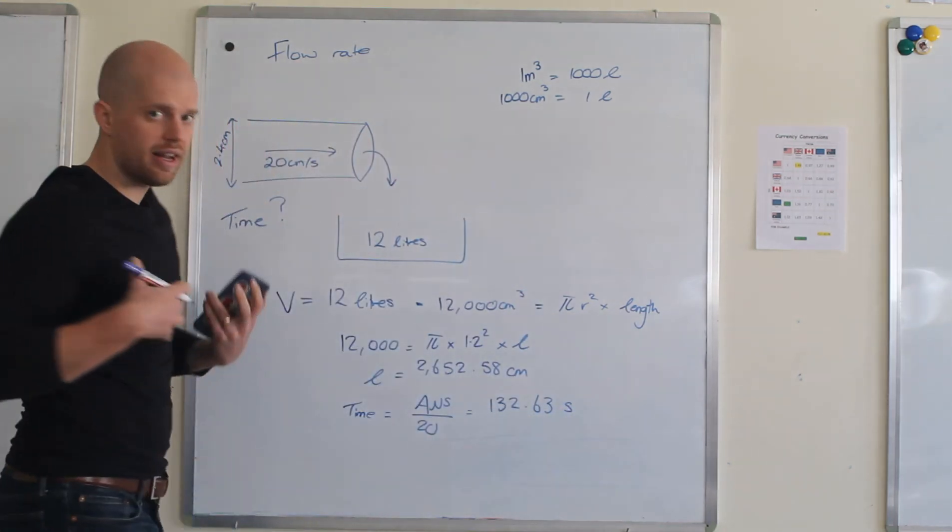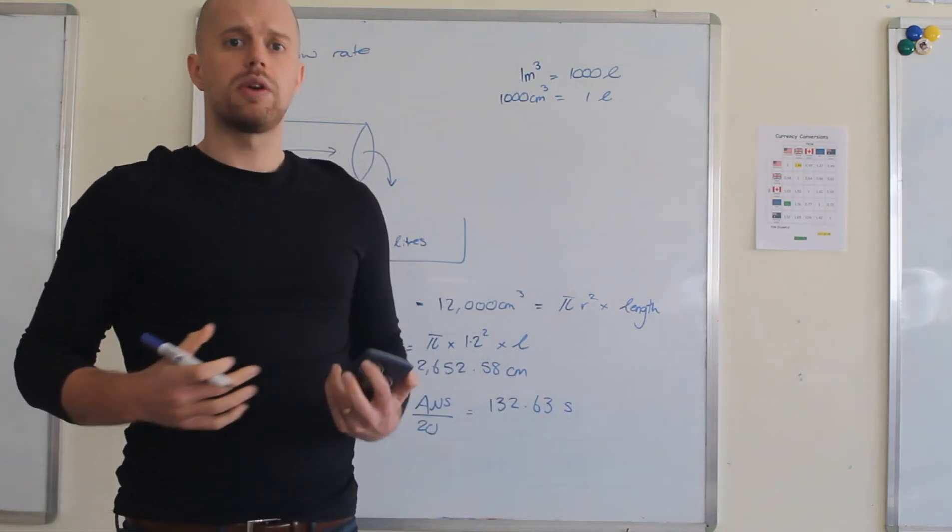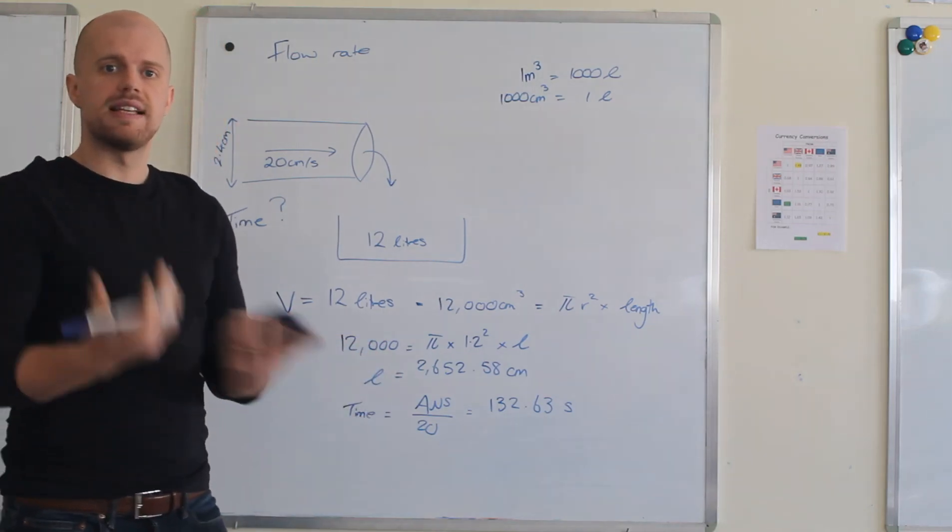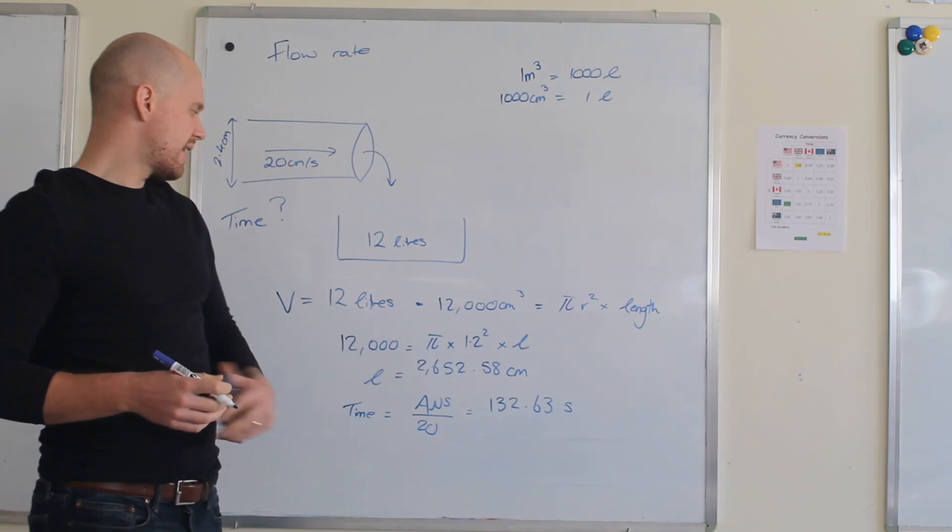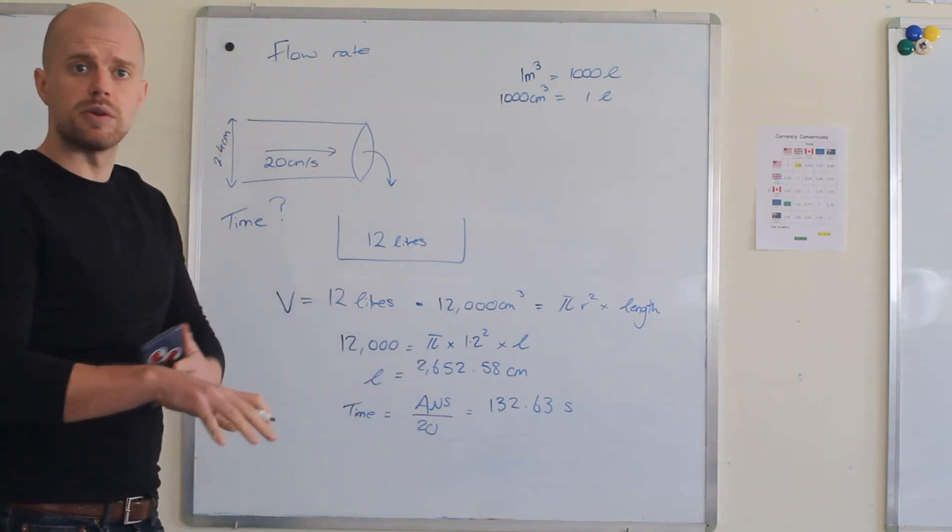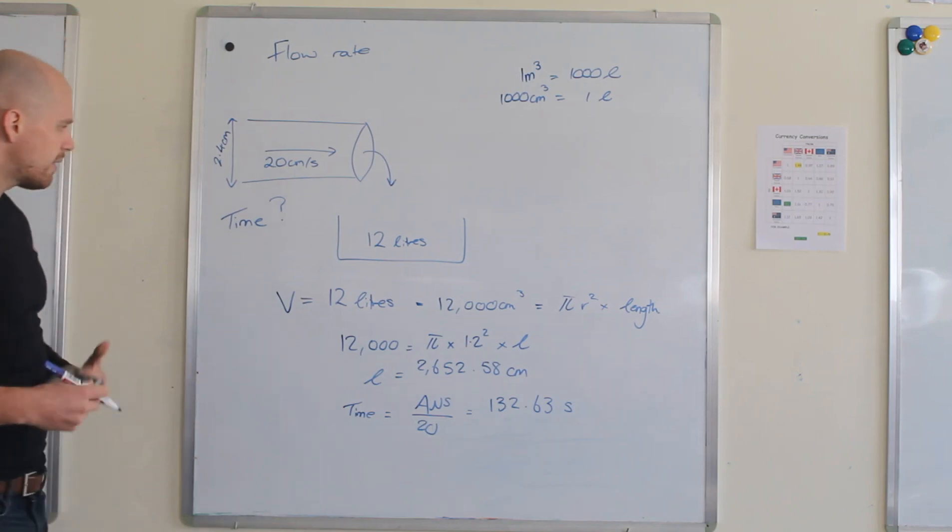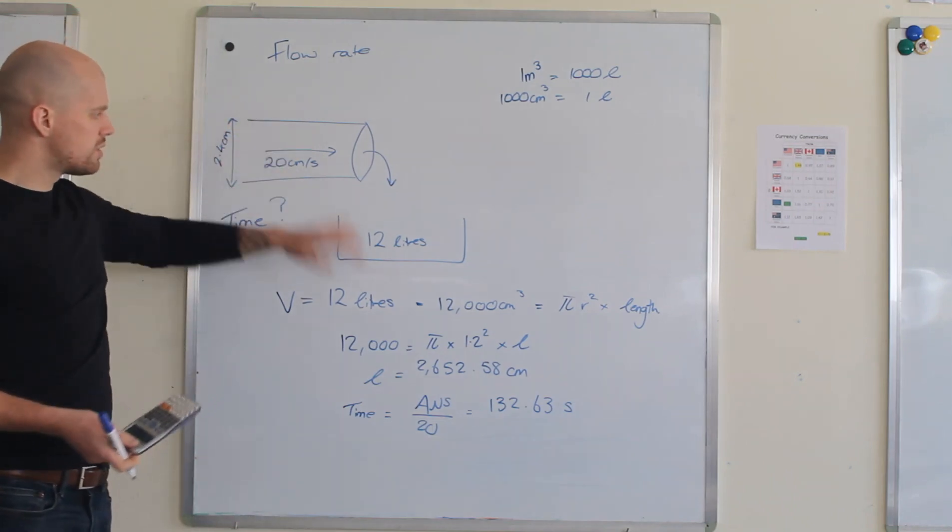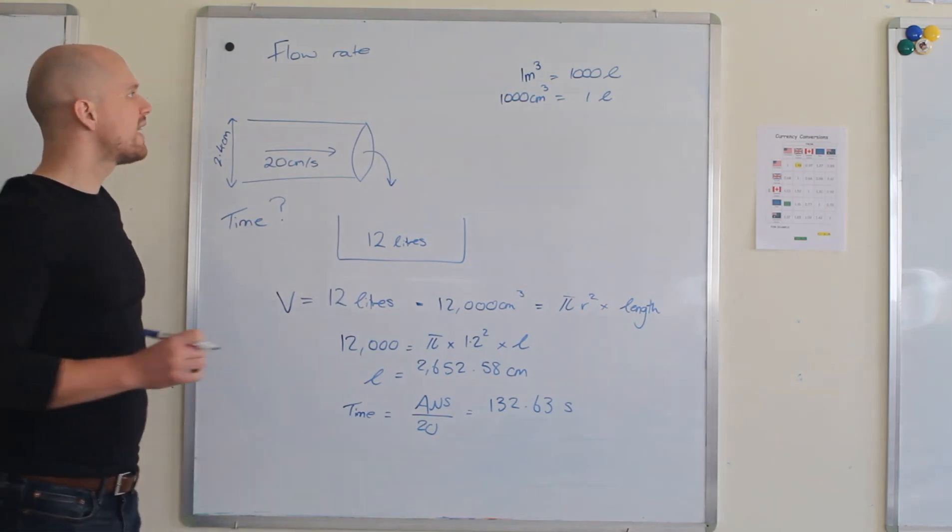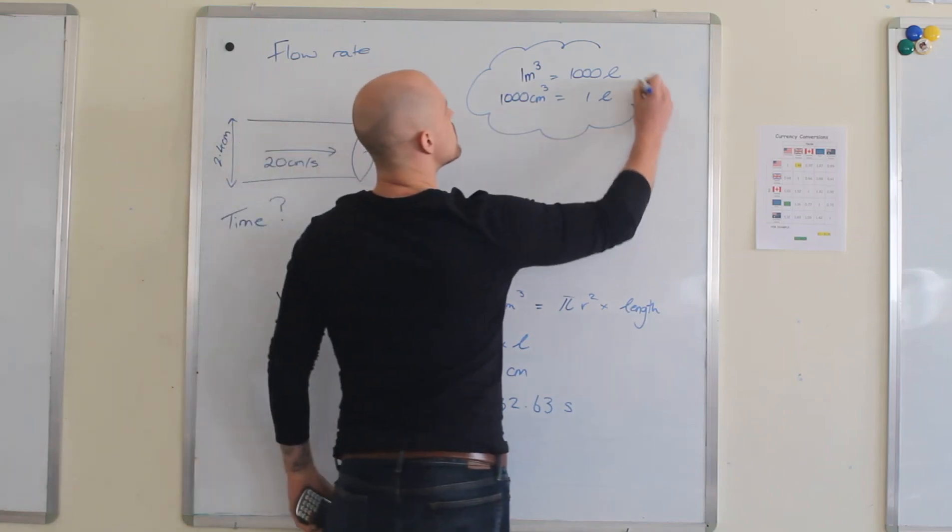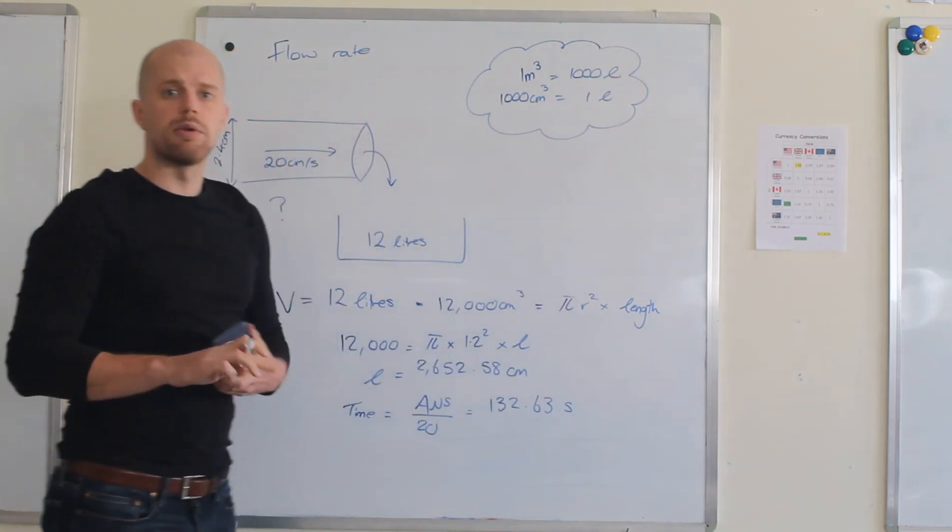Now depending on what your answer, or what the question says, you could leave it to three figs, that'd be 133 seconds. If it says in minutes, leave it as two minutes and 13 seconds, so on and so forth, it just depends what the question says. And that would be how you would use flow rates to calculate the time it would take for water to fill up a container. Don't forget, really important, these conversions. Really important you memorize those.